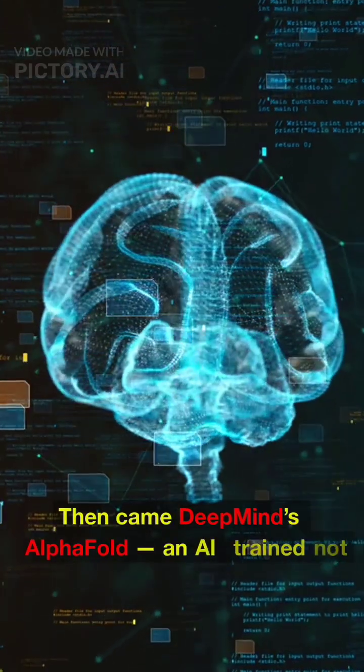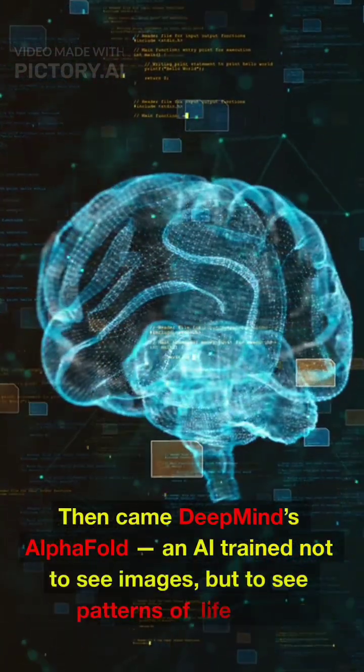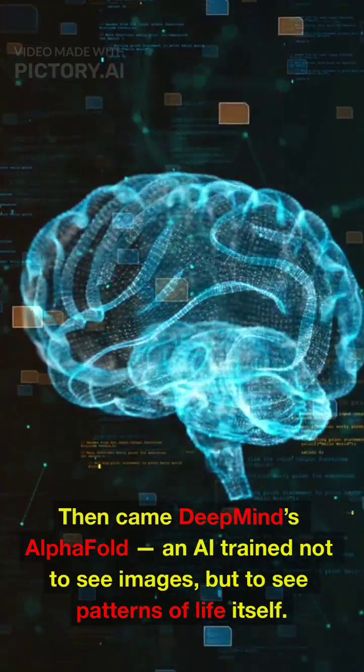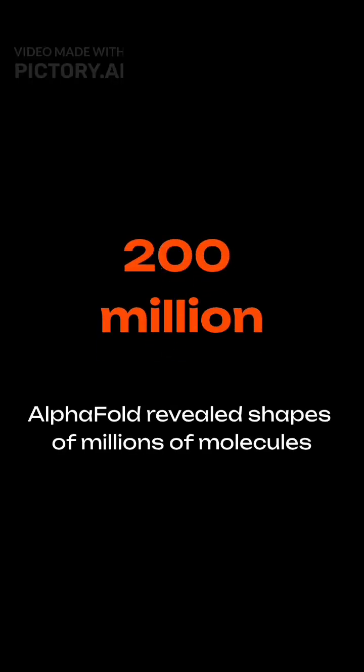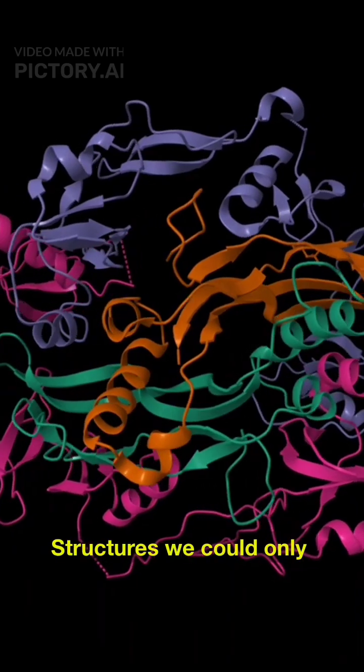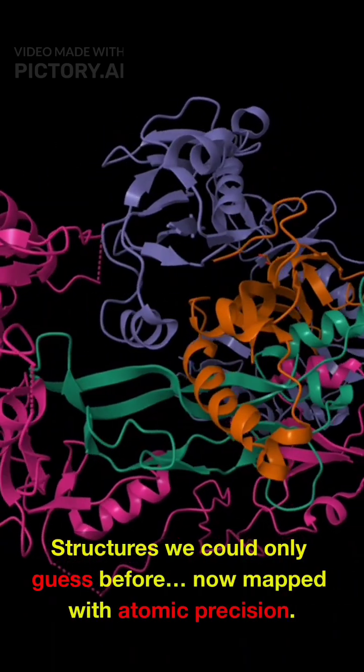Then came DeepMind's AlphaFold, an AI trained not to see images, but to see patterns of life itself. It learned how proteins twist, fold, and assemble, revealing the shapes of 200 million molecules. Structures we could only guess before, now mapped with atomic precision.